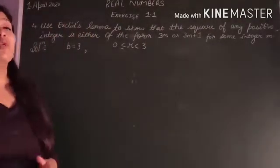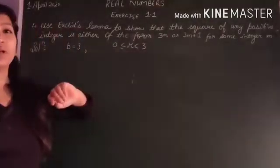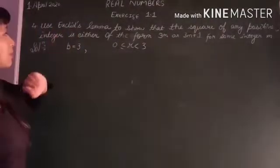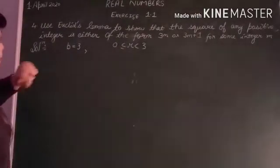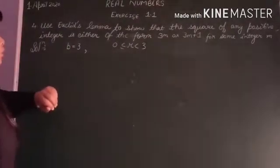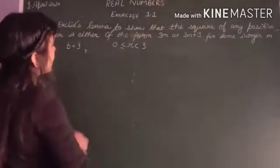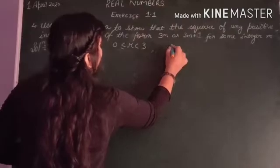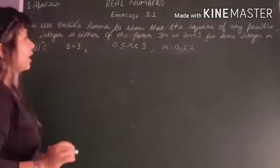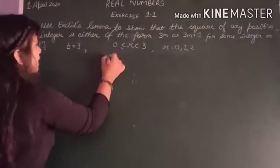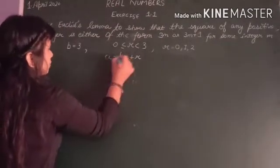Just as I have told you in my first video, the value of r depends on b. So when b is equal to 3, the value of r is r equal to 0, 1, and 2.